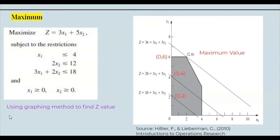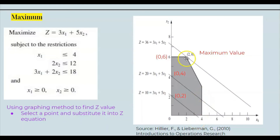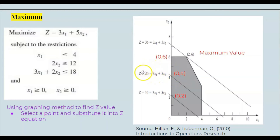A second method is the graphing method to find the Z value. Select a corner point and substitute it into the Z equation. Using (2,6) gives z = 36, so the equation is 36 = 3x + 5y. Using (0,4) gives z = 20, so 20 = 3x + 5y. Using (0,2) gives z = 10, so 10 = 3x + 5y.